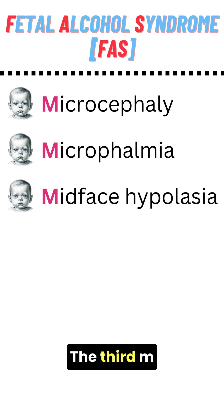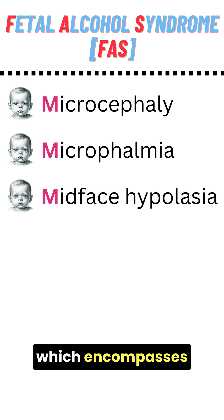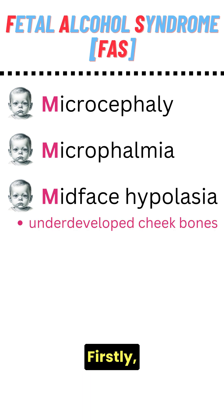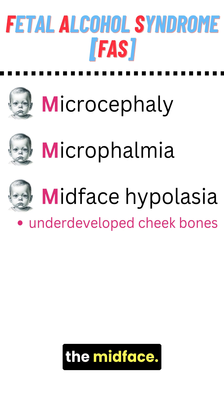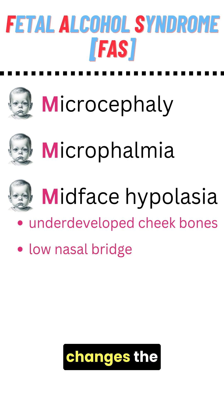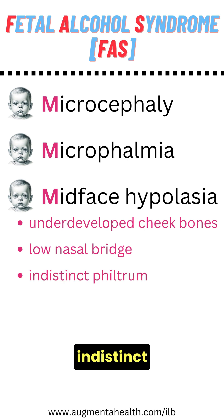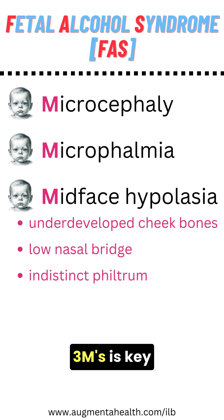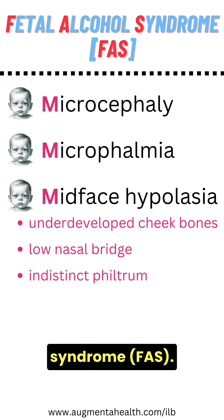The 3rd M is midface hypoplasia, which encompasses 3 distinct features. Firstly, underdeveloped cheekbones give a flattened appearance to the midface. Secondly, a short nose with a low nasal bridge changes the overall facial profile. And thirdly, an indistinct philtrum and a thin upper lip. Recognizing these 3 Ms is key in diagnosing fetal alcohol syndrome.